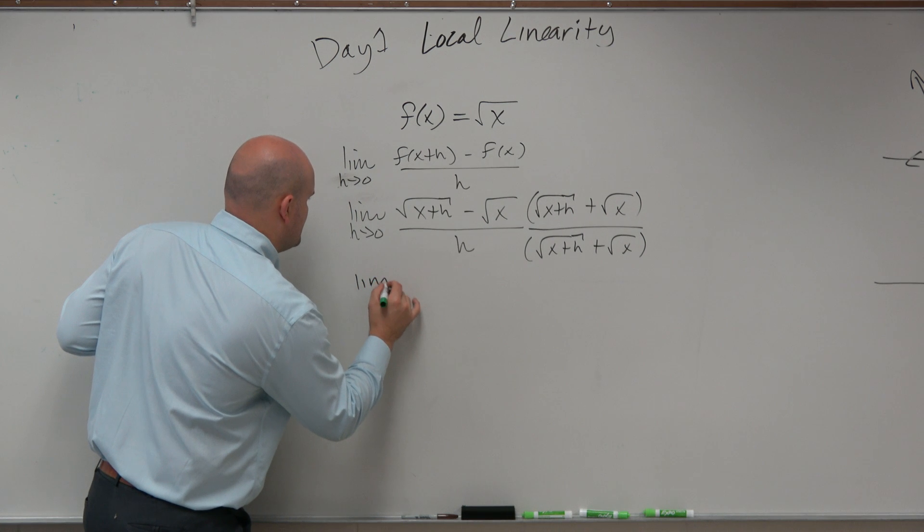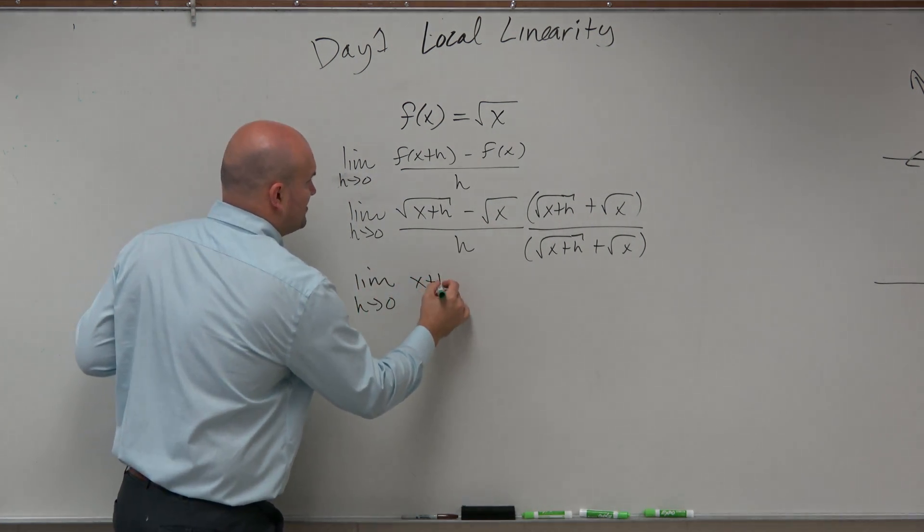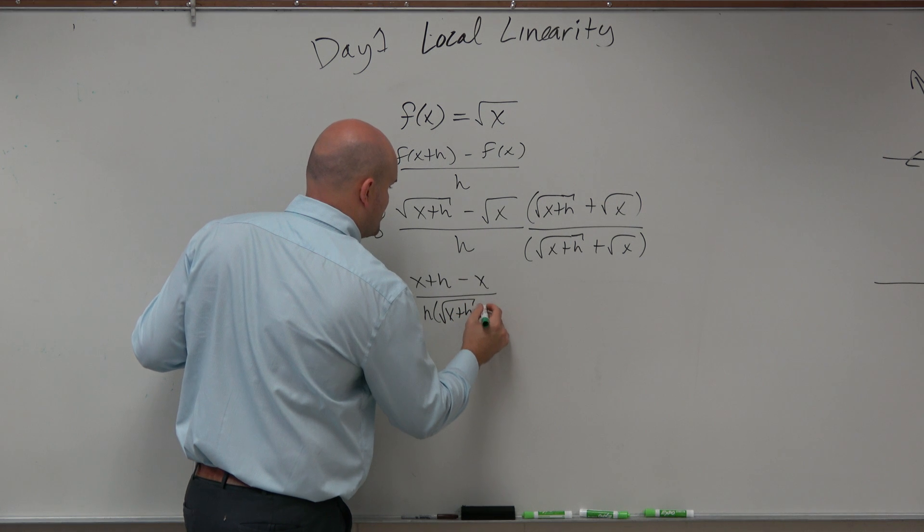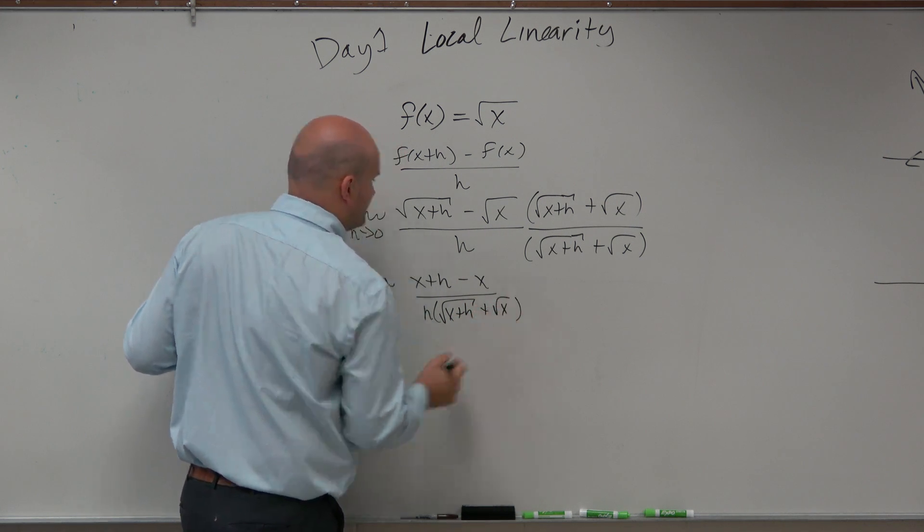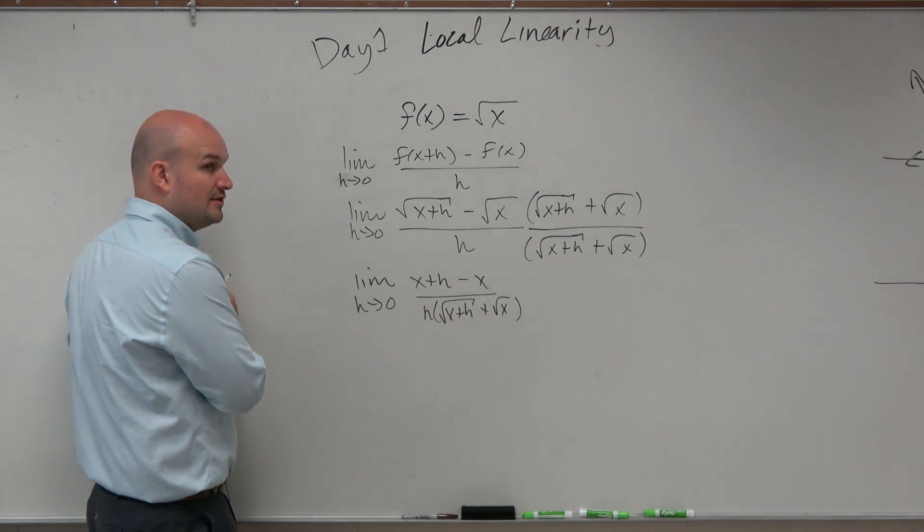That's OK. So limit as h approaches 0. Now we're going to get x plus h minus x all over h times square root of x plus h plus the square root of x. OK?